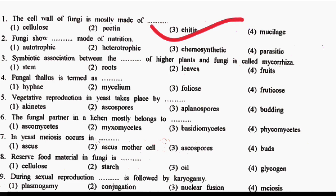Next question: fungi shows DASH mode of nutrition. Option 1: Autotrophic. Option 2: Heterotrophic. Option 3: Chemo-synthetic. Option 4: Parasitic. The correct answer is Option 2, that is Heterotrophic.